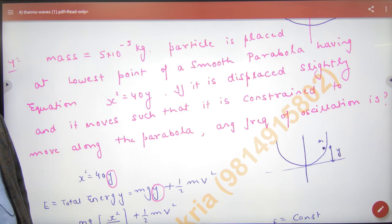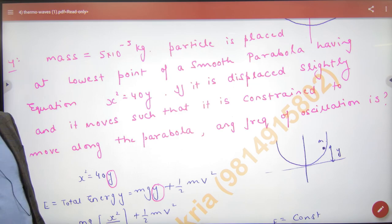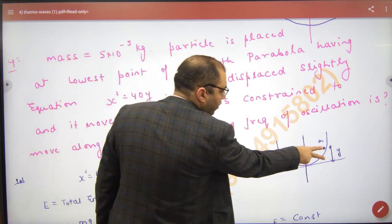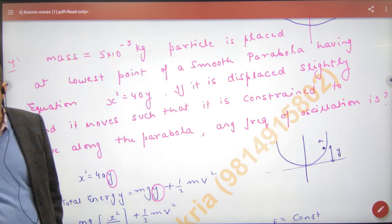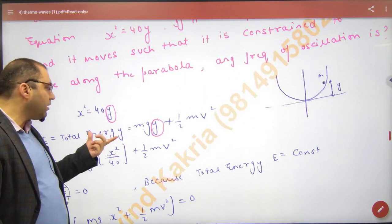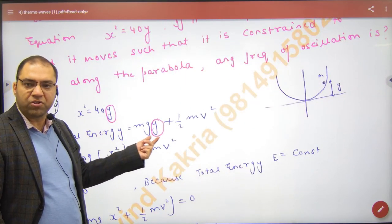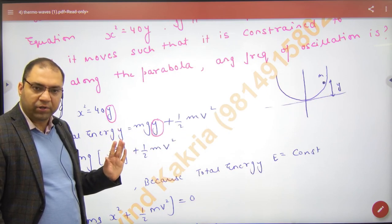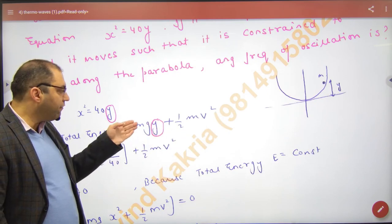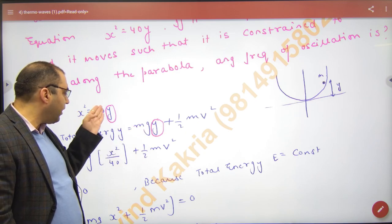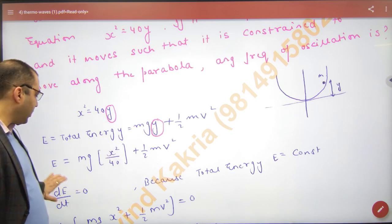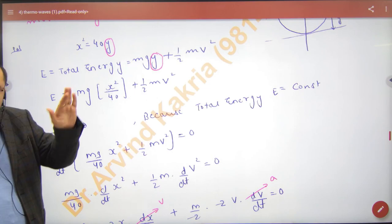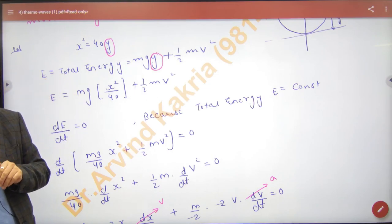Find the time period. Now, when it is moving at height y from the origin, what will be the total energy? Sum of potential and kinetic. Potential is mgy, kinetic is half mv². Now y is in the form of x²/40. So what is the energy?